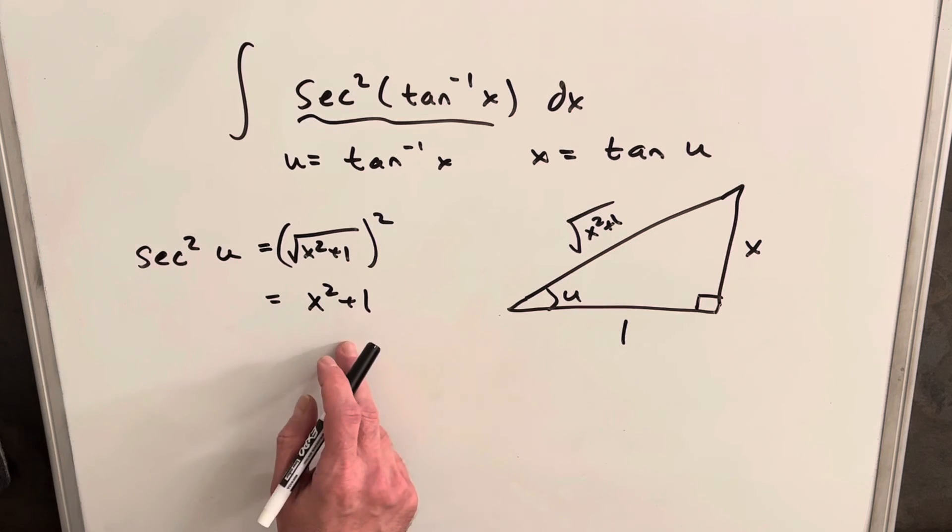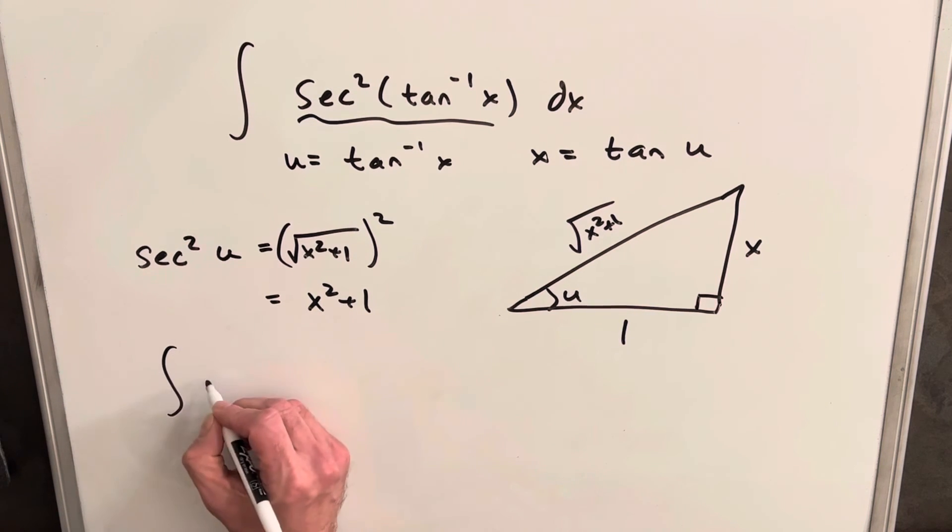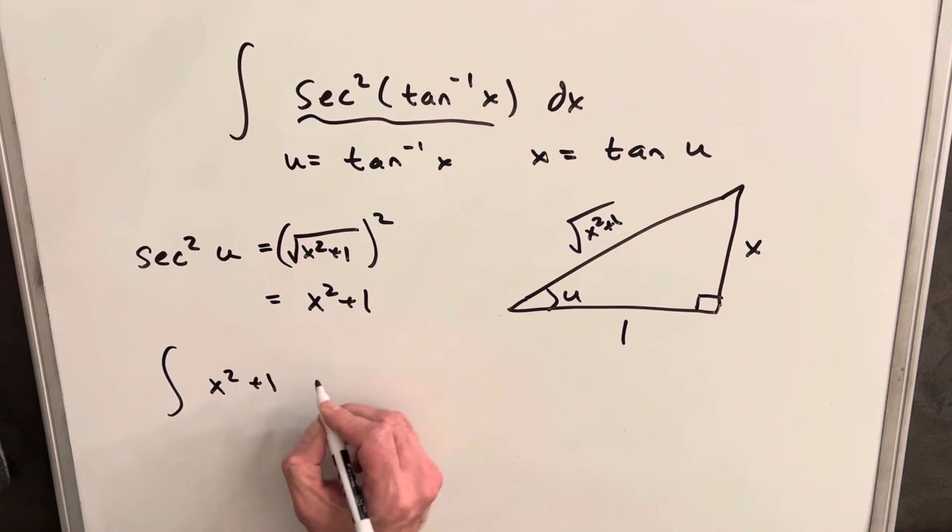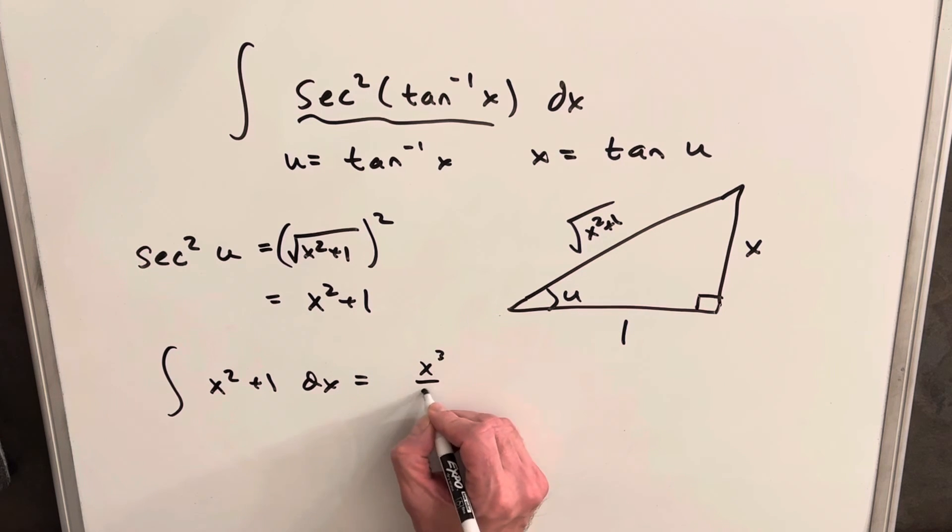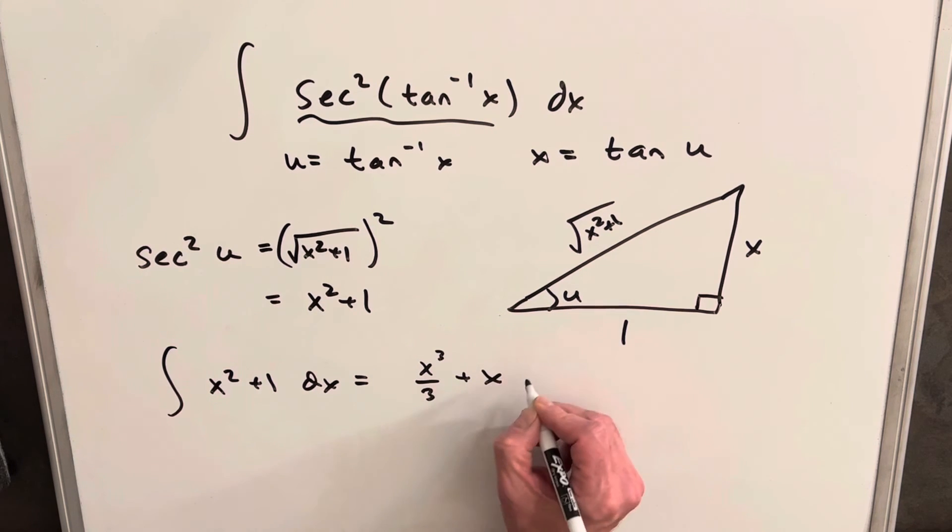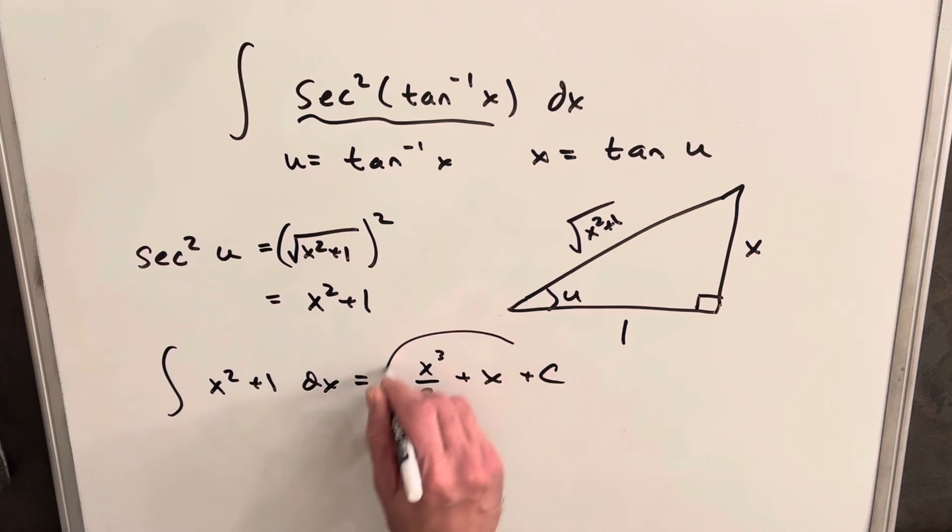So if this is x squared plus 1, we actually don't even need a u substitution. We just have the integral of x squared plus 1 dx, and this is just the power rule. Very simple. Integrating this, we're going to have x to the third over 3 plus x plus c, and we're done.